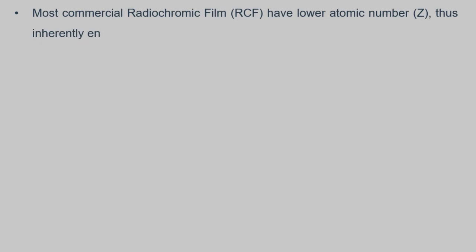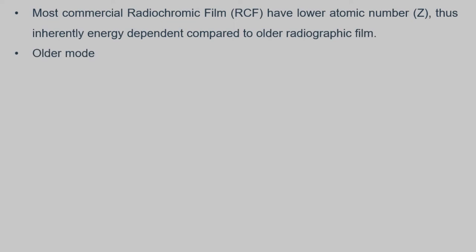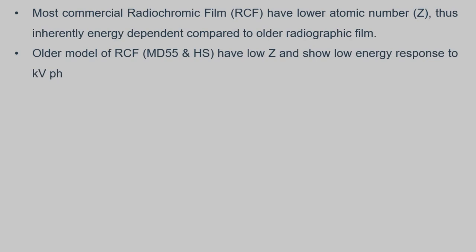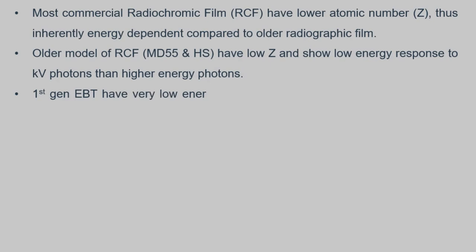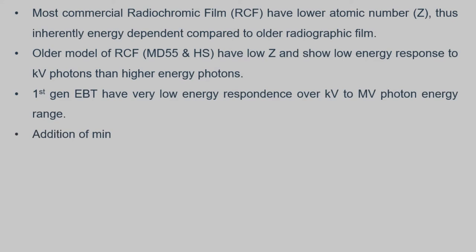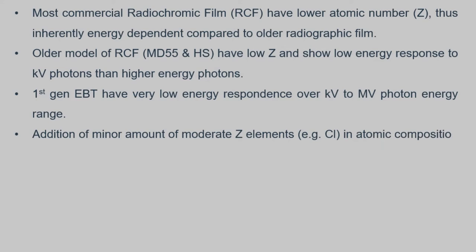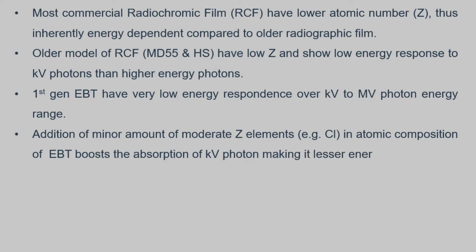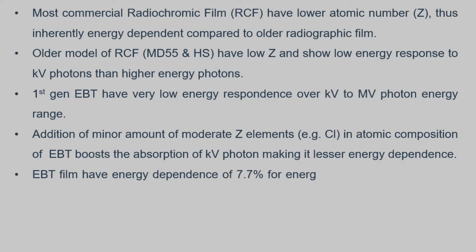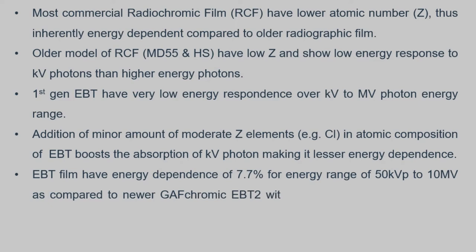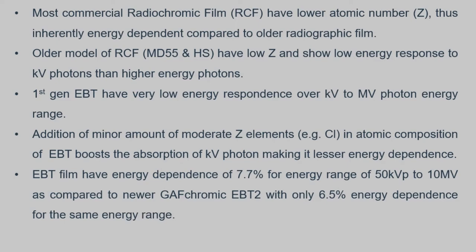Most commercial RCF have lower atomic number that is inherently energy dependent compared to radiographic film. Models of RCF such as MD55 and HS have low Z and show low energy response to kV photons compared to higher energy photons. First generation EBT has very low energy dependence over kV to MV photon energy range. Addition of minor amounts of moderate Z elements, for example chloride, in the atomic composition of EBT boosts absorption of kV photons, making it less energy dependent. EBT film has energy dependence of 7.7% for an energy range of 50 kV to 10 MV, compared to GAFChromic EBT2 with only 6.5% energy dependence for the same energy range.